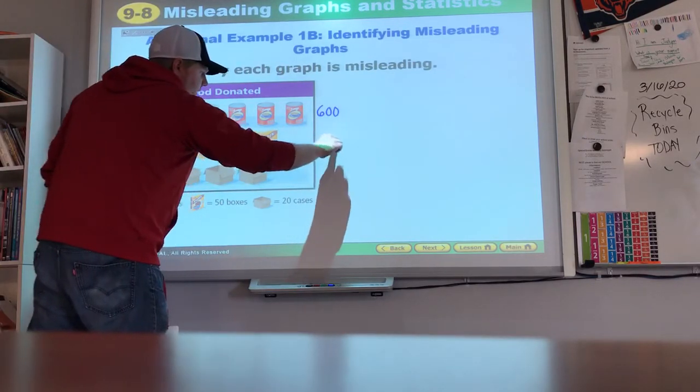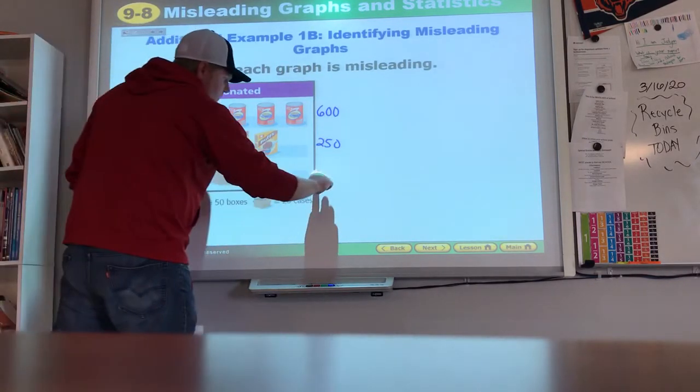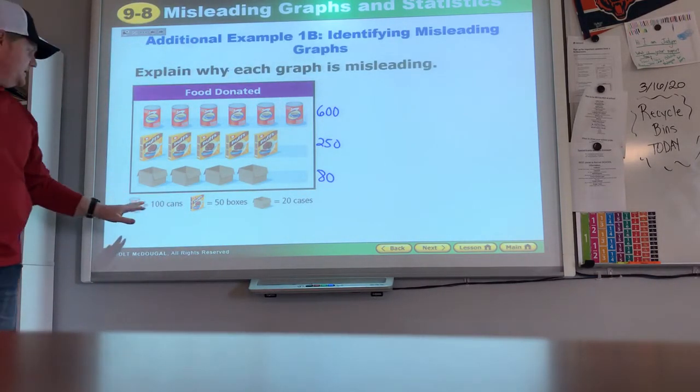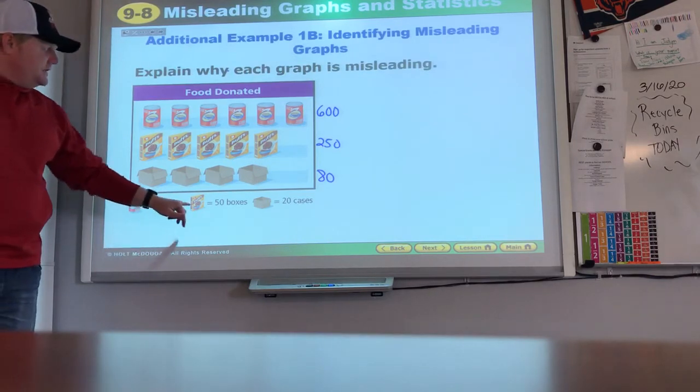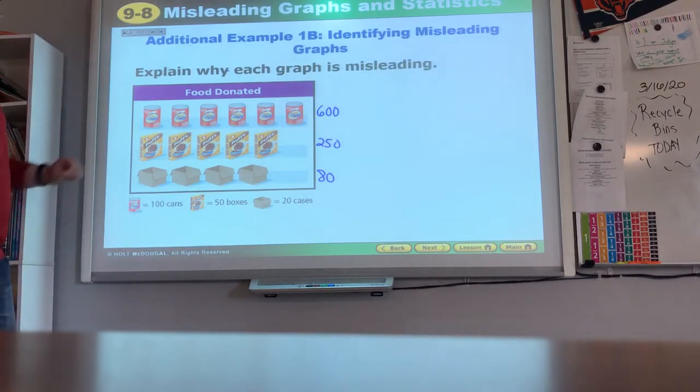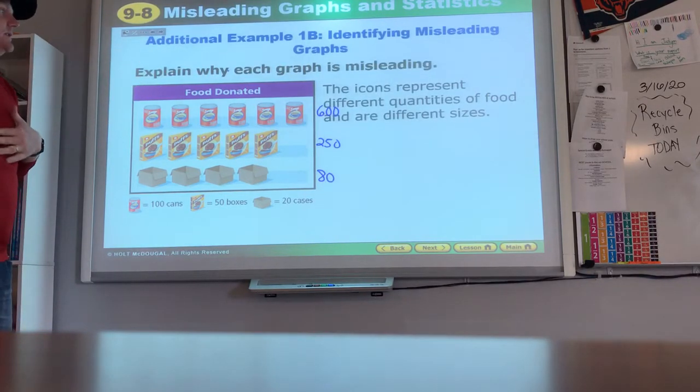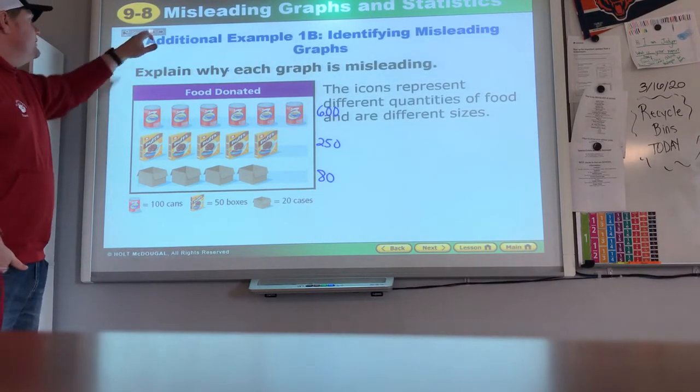Well, if we think about it, each of these is 100 so that's 600. Each of these is 50 so that's 250. And each of these is 20 so that's 80. Those numbers really are quite different because what each symbol represent or the amount that each symbol represented. That's misleading. The icons represent different quantities and are of different sizes.